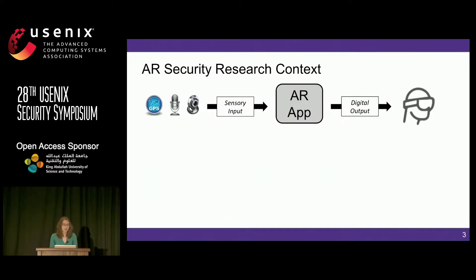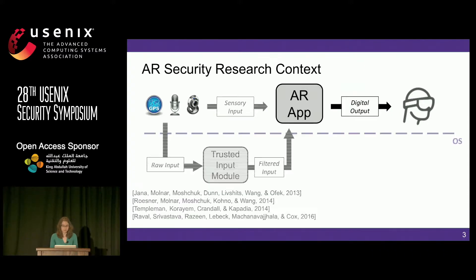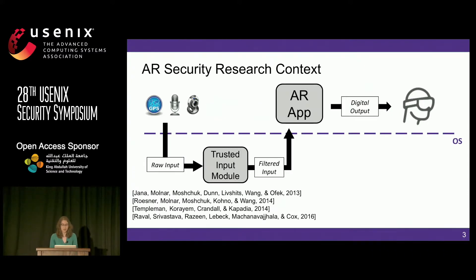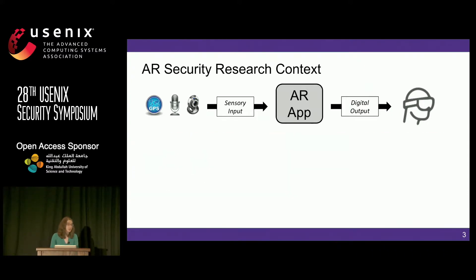What all of these technologies have in common is that they continuously process sensory input from the user's surroundings and overlay digital content on top of the user's perception of the world. Conceptually, we can think of this as a pipeline in which an AR application takes some sensory input, uses that information to generate digital output, and gives it to the user. Because of the power that AR applications have over users' perception, the security and privacy community has done important work applying good security and privacy principles to this scenario.